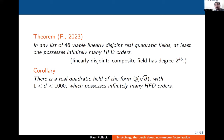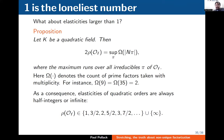Here is what you can prove: take any 46 viable linearly disjoint real quadratic fields — linearly disjoint meaning the composite has degree 2^46. Among those 46 fields, at least one of them contains infinitely many HFD orders inside it. In particular, this implies that among the real quadratic fields Q(√d), there is some d less than 1000 for which the ring of integers has infinitely many HFD orders inside it.